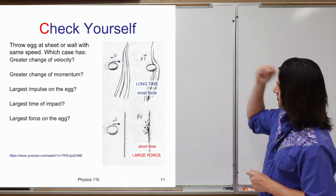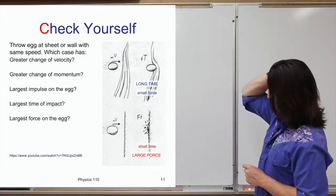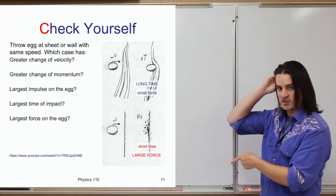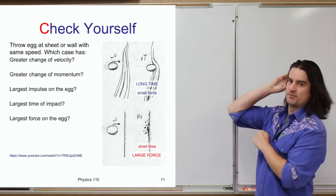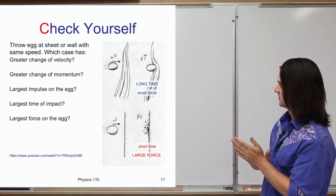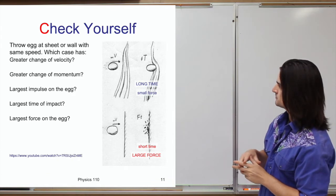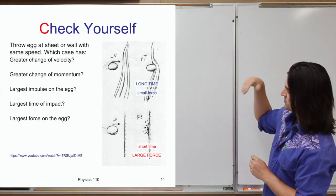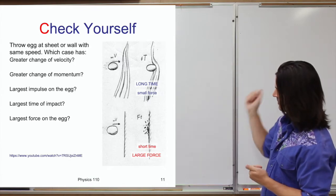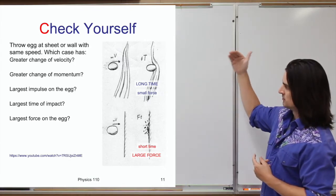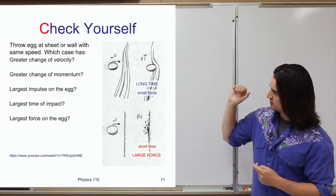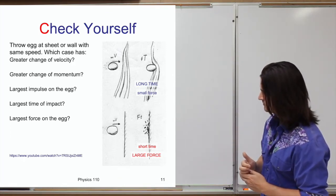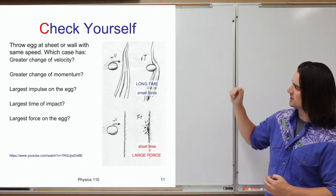Now some questions about the egg-throwing at a sheet, and also comparing what happens when you throw an egg at a wall — you get a whole different effect. If you throw an egg at a sheet hanging loose, or you throw an egg at a wall: which has the greater velocity, which has the greater momentum, the largest impulse, the largest impact time, and the largest force on the egg? Hit pause and try to give a quick answer to each of these questions.